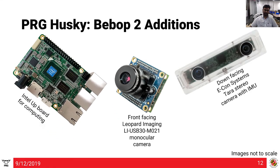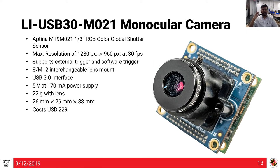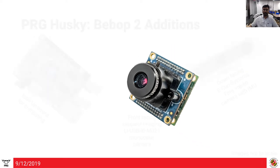The front-facing Leopard Imaging camera comes with an Aptina MT9M021 1/3-inch RGB global shutter color sensor. Maximum resolution is 1280×960 at 30 Hz, it supports external and software trigger, draws about 170 mA at 5V, weighs about 22 grams with lens, and the size is 26×26×38mm.